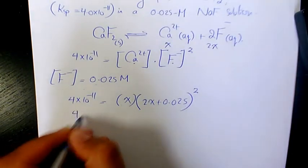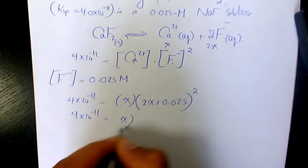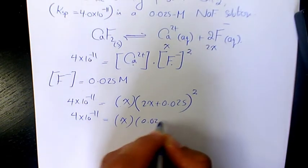We're going to have 4 times 10 to the power of negative 11 equals to x times 0.025 to the power of 2.